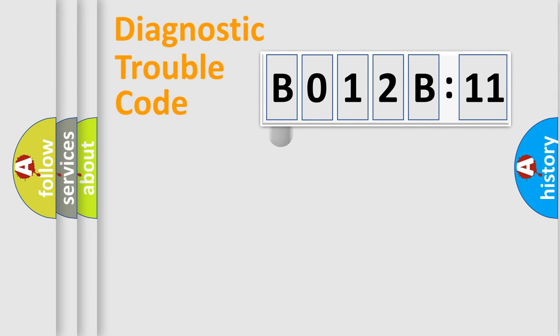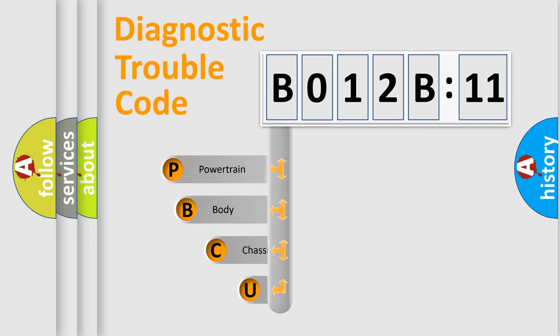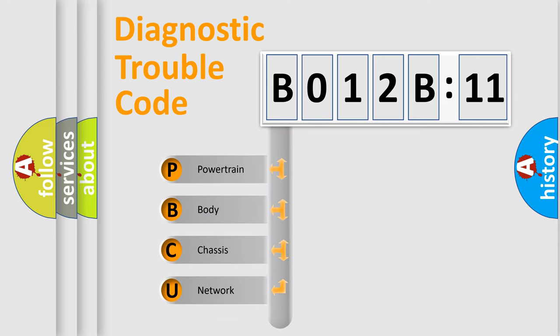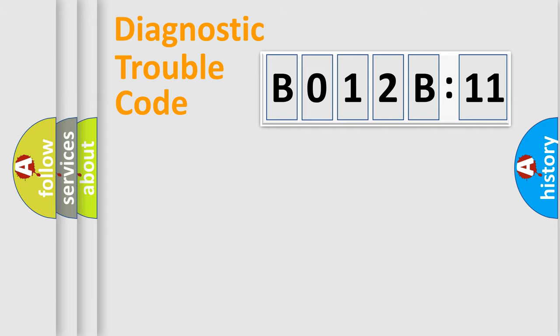First, let's look at the history of diagnostic fault code composition according to the OBD2 protocol, which is unified for all automakers since 2000. We divide the electric system of the automobile into four basic units: Powertrain, Body, Chassis, and Network.